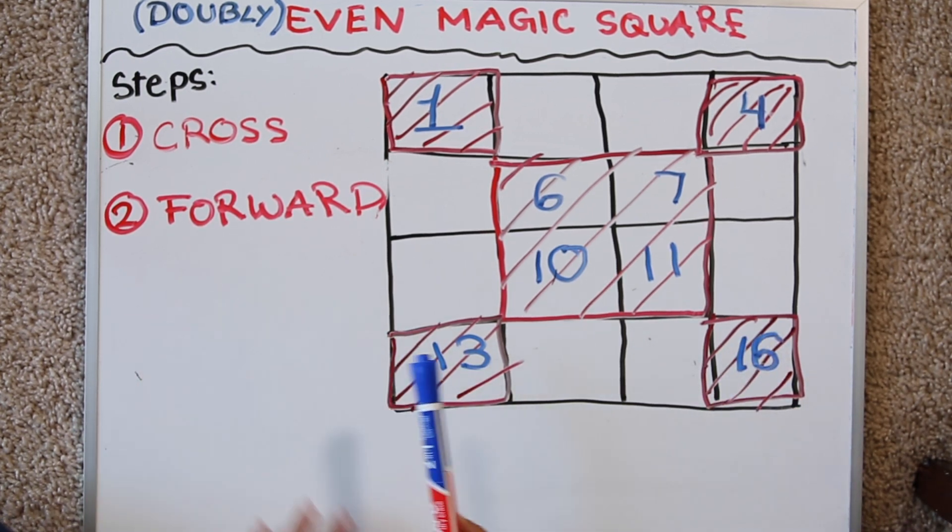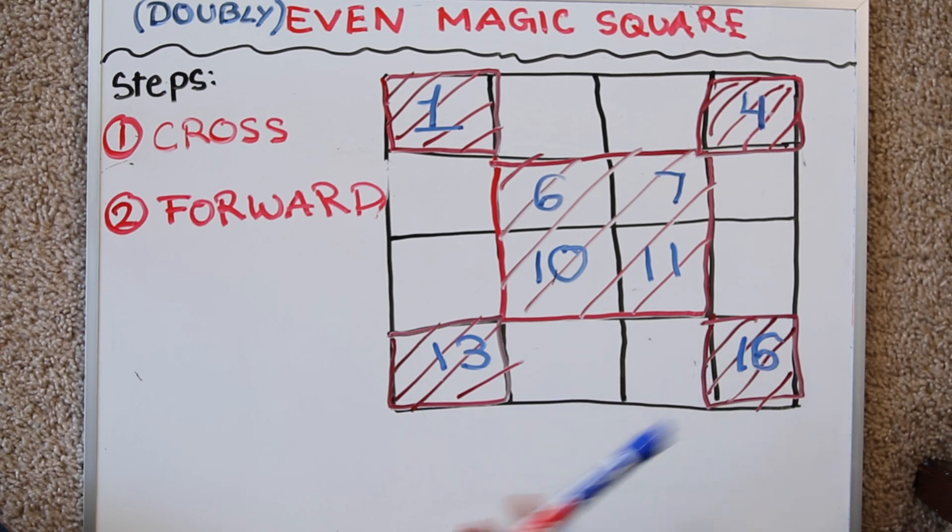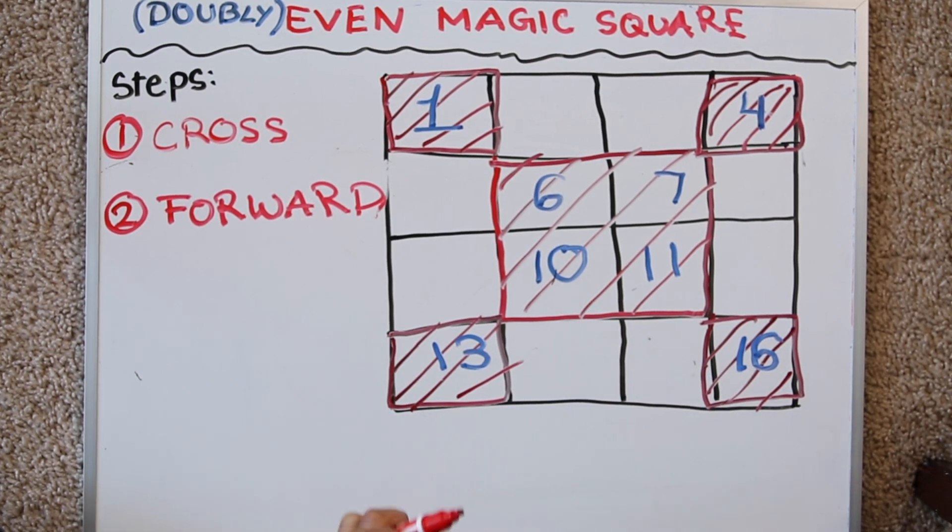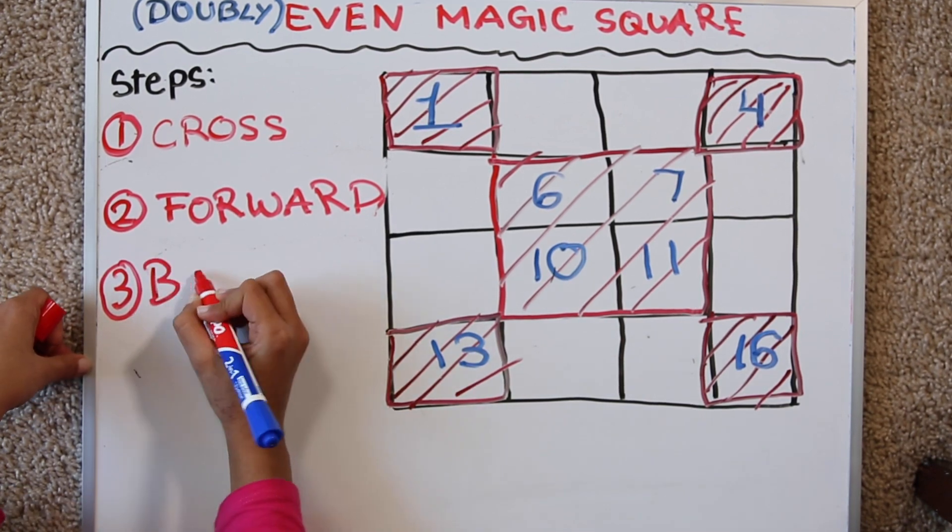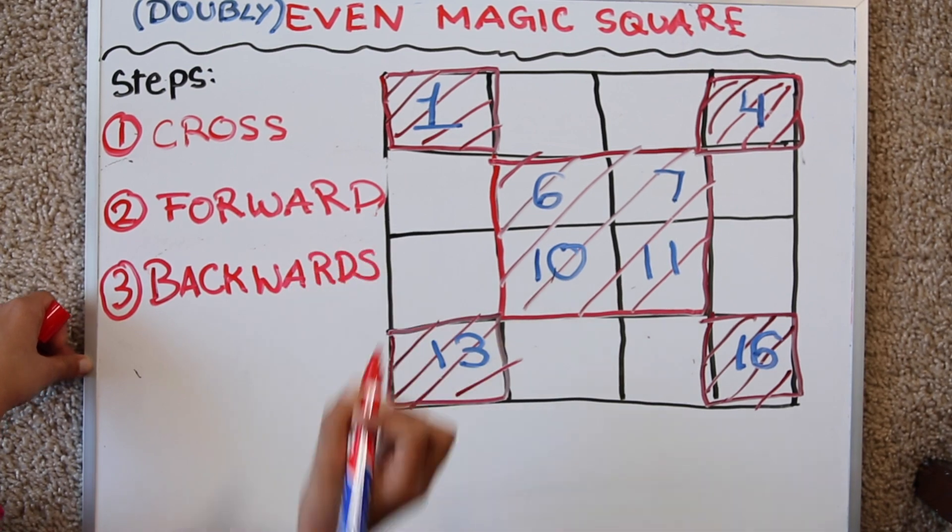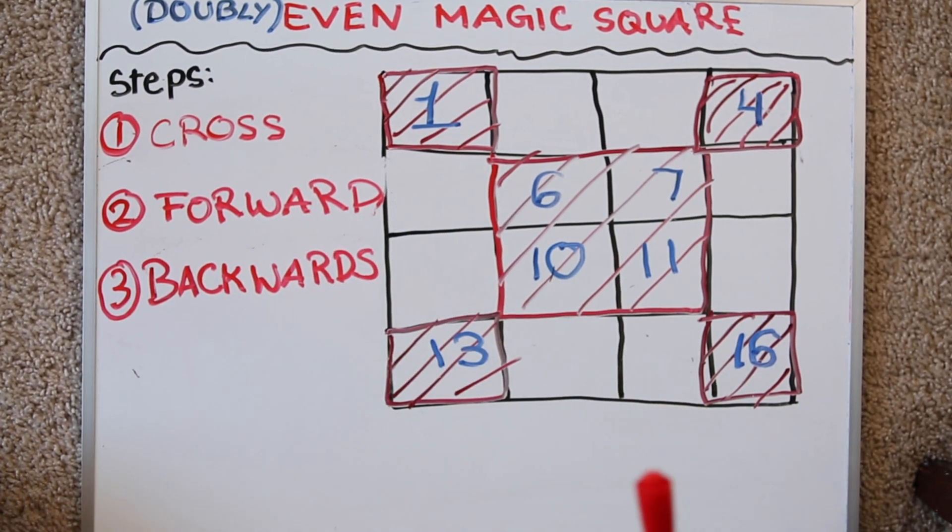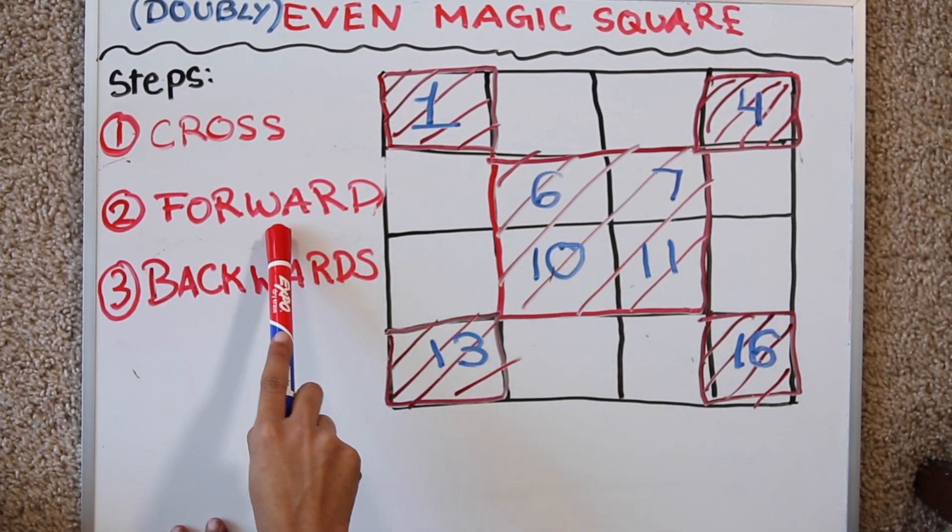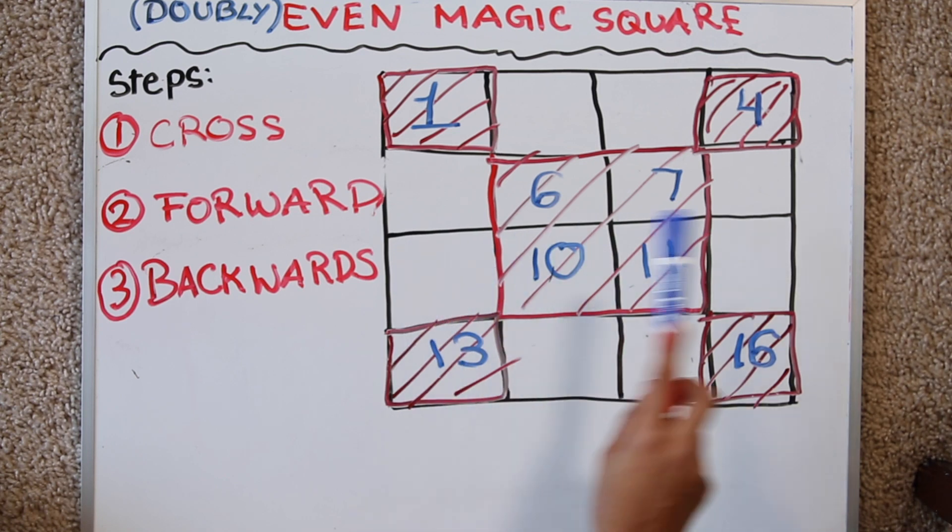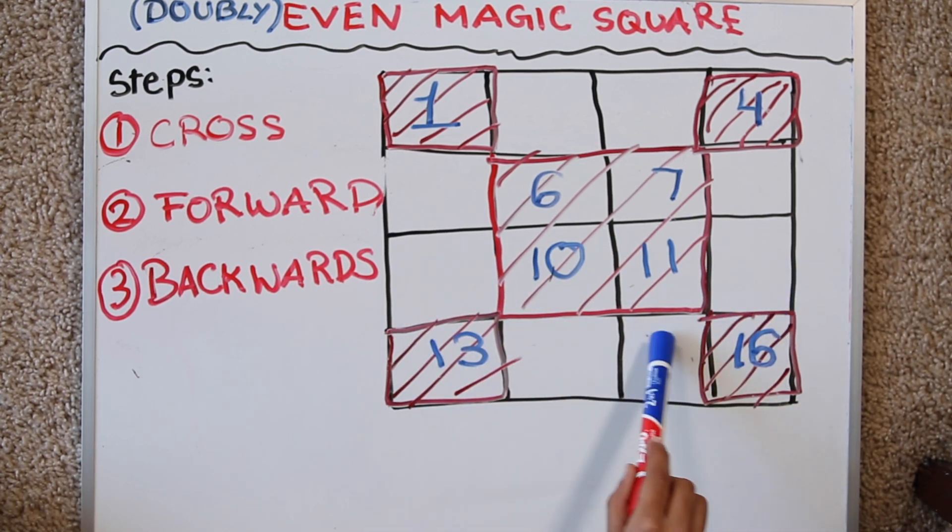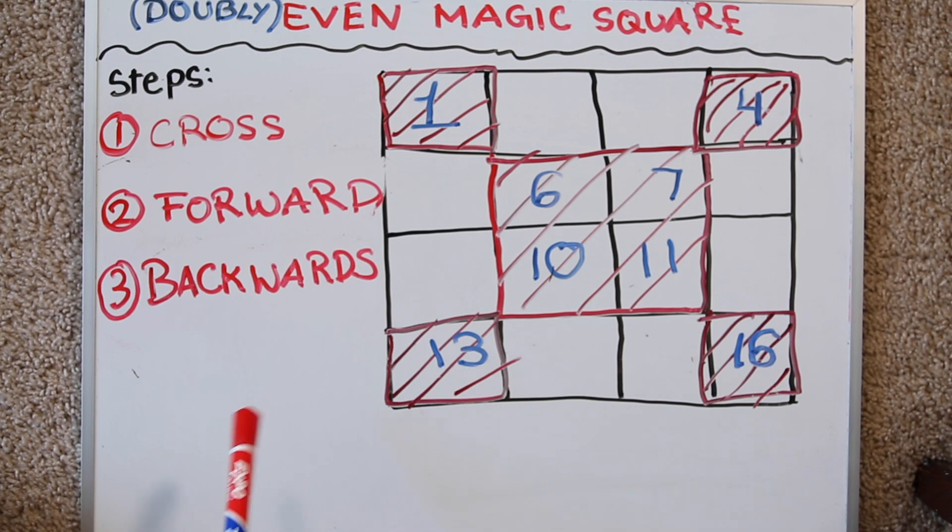Now that was step forward. Simple isn't it? Now let's move on to the third and final step. It's called as you already guessed backwards. In this step you do the exact opposite of what you did in step 2. You start from the last square and go backwards. But you write in the non-shaded squares or empty squares. Let me demonstrate.